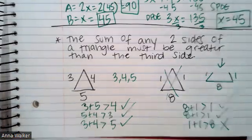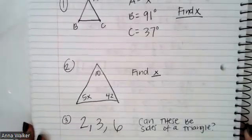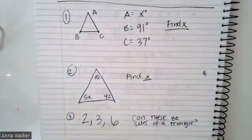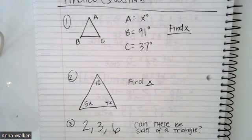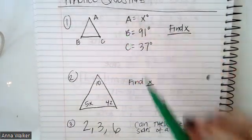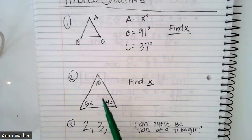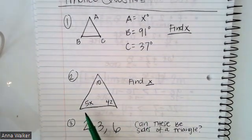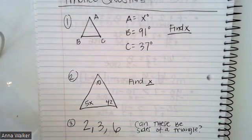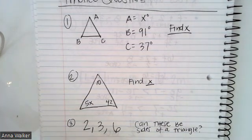Now to practice what you've learned, there are three practice questions. In triangle ABC, if angle A is x, angle B is 91, and angle C is 37, find x. In question two, you have a triangle with angles of 10 degrees, 5x, and 42 — your goal is just to find x. The last question: if you have sides of 2, 3, and 6, could these be sides of a triangle? Test each pair — 2 and 3, 3 and 6, 2 and 6 — and see if they work. When you're done, feel free to check your answers in the table of contents. I hope you guys have an awesome day. Goodbye!